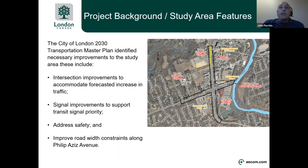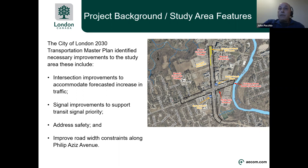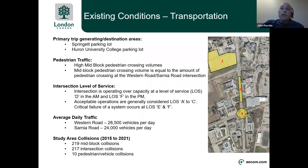The current city master plan has identified the following improvements for this area: intersection improvements to accommodate forecast increases to traffic volumes, potential signal improvements to support transit as a priority, general safety improvements at the intersection and along Western Road, and improvements to the road along Philip Aziz Avenue. From the cycling master plan, key takeaways include buffered bike lanes on Sarnia Road, a shared bike route with sharrows on Philip Aziz Avenue, and dedicated bike lanes on Western Road.